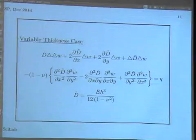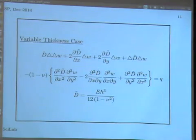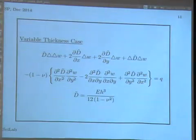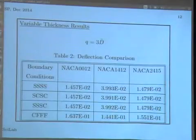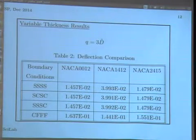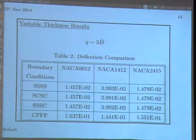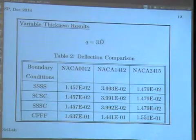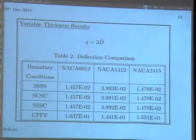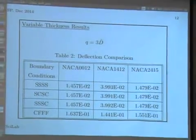Next we looked at the variable thickness case. It is essentially the same, except the equation becomes messier because the thickness H varies with x and y, so derivatives of D appear everywhere. For this case we had no standard comparison, so we applied it to NACA aerofoil profiles under various boundary conditions and obtained results. The codes were written from first principles in Fortran, with the LU decomposition routine taken from Netlib.